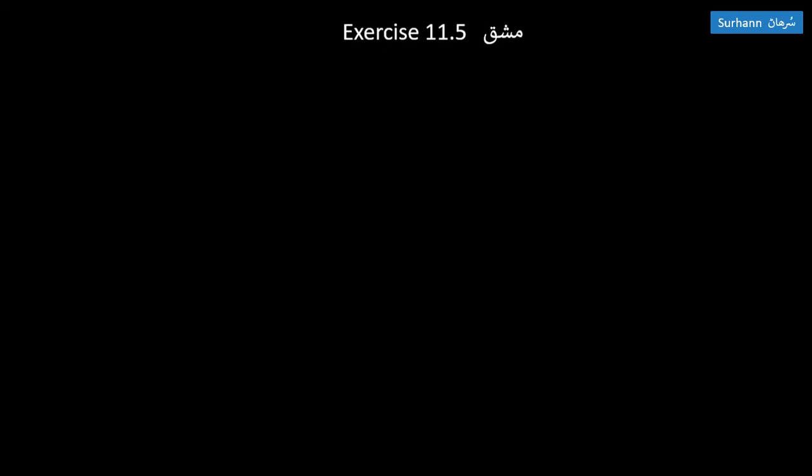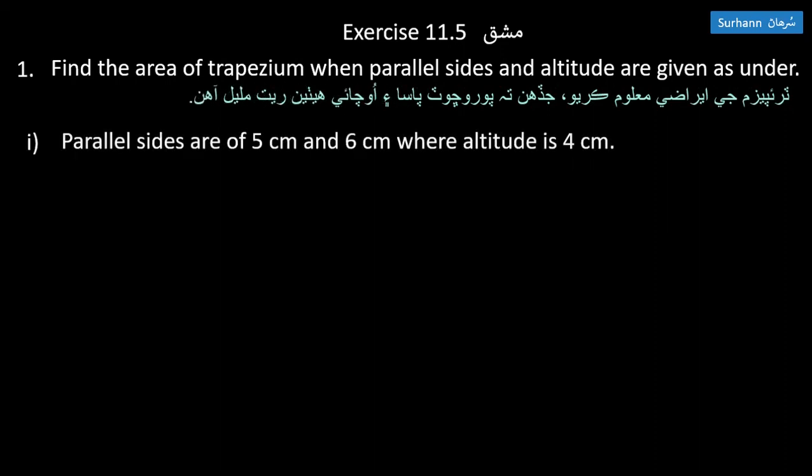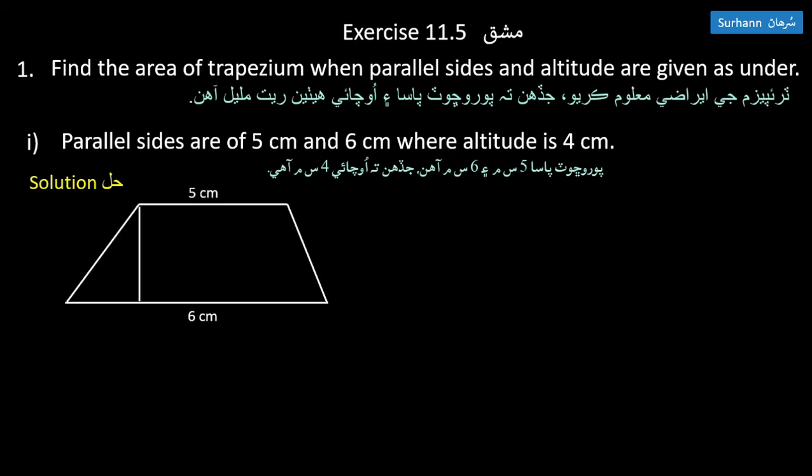This is exercise 11.5: find the area of trapezium when parallel sides and altitude are given as under. Number one: parallel sides are 5 cm and 6 cm where altitude is 4 cm. Then here is the trapezium.